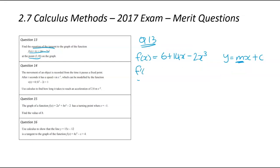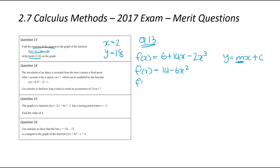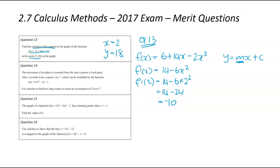So let's differentiate. f'(x) is going to be equal to — the 6 cancels — so we've got 14 minus 6x squared. Now we need to figure out the x value. We know that x equals 2 and y equals 18, so we're going to substitute 2 into this equation. f'(2) equals 14 minus 6 times 2 squared, that's 14 minus 24, which equals negative 10. So the gradient when x equals 2 is negative 10 — that's our m value.